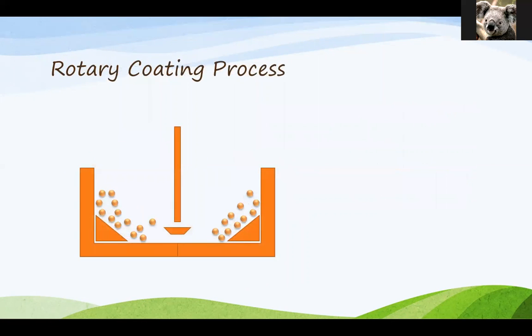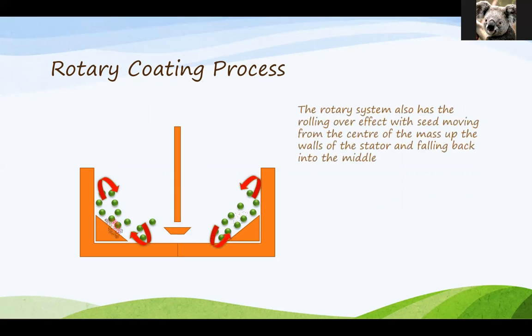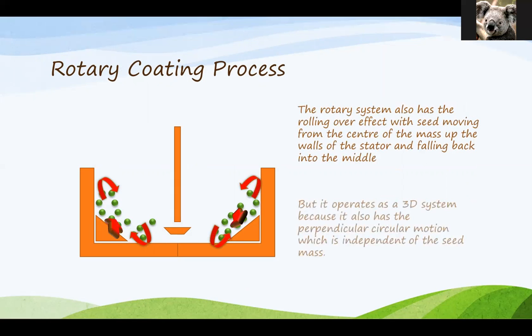If we look at the rotary coating process you still have that 2D tumbling motion within the seed but you also have from the rotary system itself a third degree of motion. Therefore you have a complete tumbling mass of seed of which you have more control over the speed that you can use for moving this around. Because of that better movement and that greater control it allows more even coverage and a faster application rate.